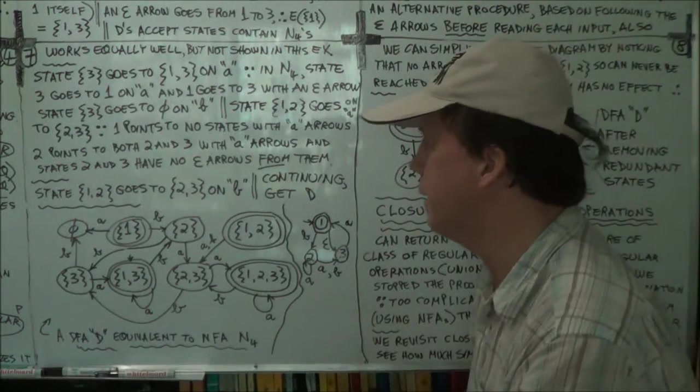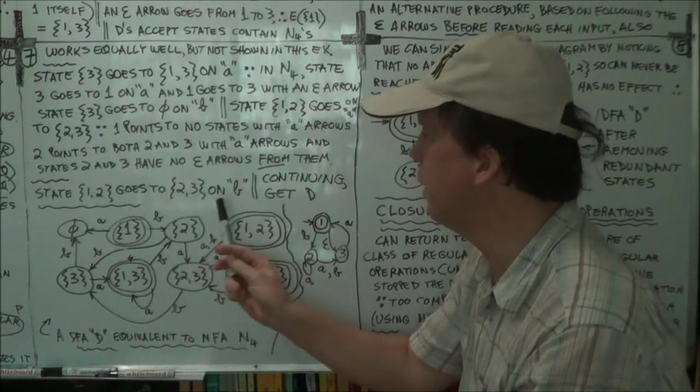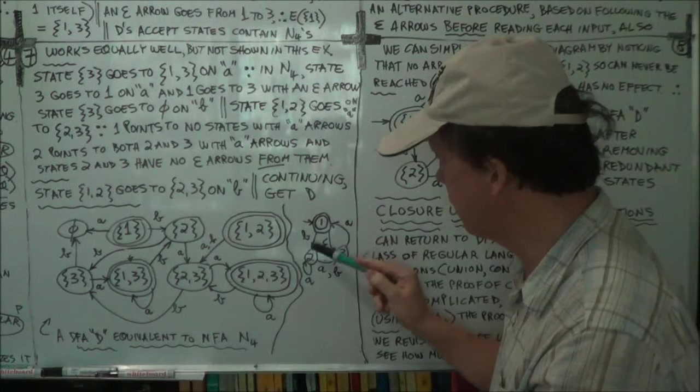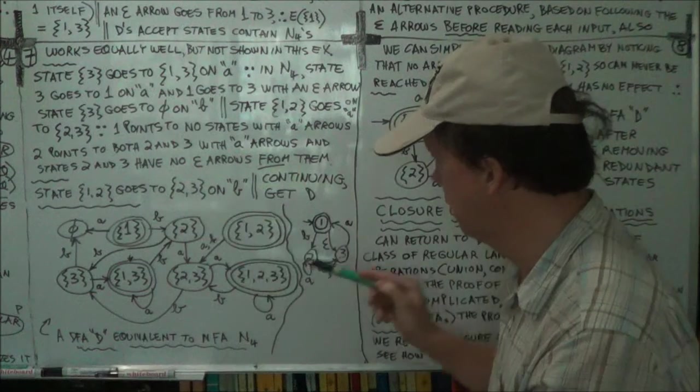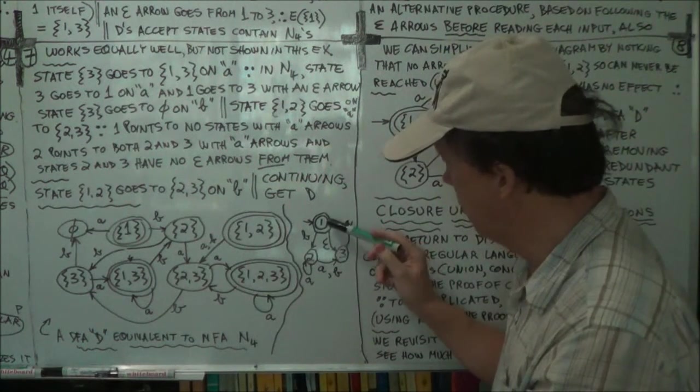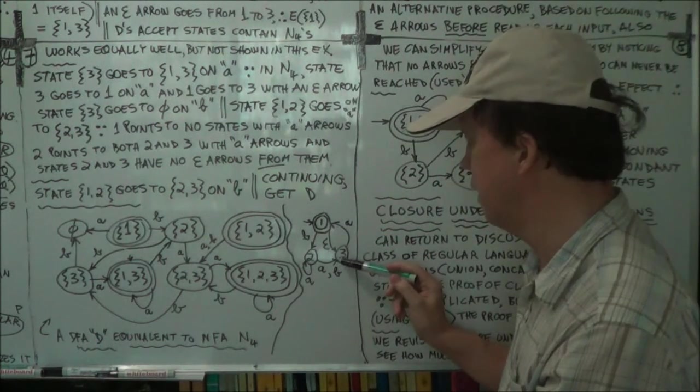Okay, now what about D? So what does this D state go to when B comes in? When B comes in, well, one just goes to two, right, so you've got two in there. Immediately, eta, due to the eta, you've got a state three.